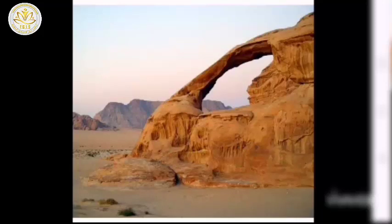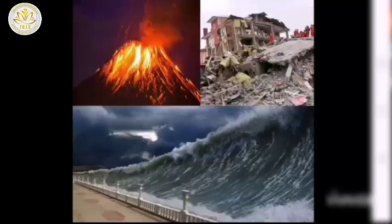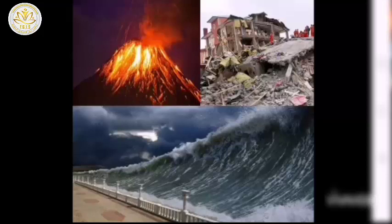Some of Earth's mountains are volcanic mountains. A volcano is a vent in Earth's crust through which molten rock flows. The slow motion of Earth's tectonic plates causes the formation of volcanoes. Volcanic eruptions shape Earth's surface, form large mountains, create new crust, and leave a path of destruction.